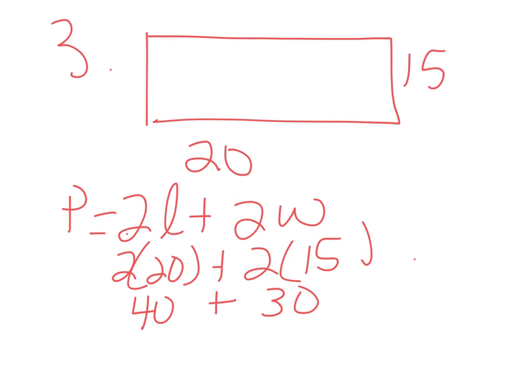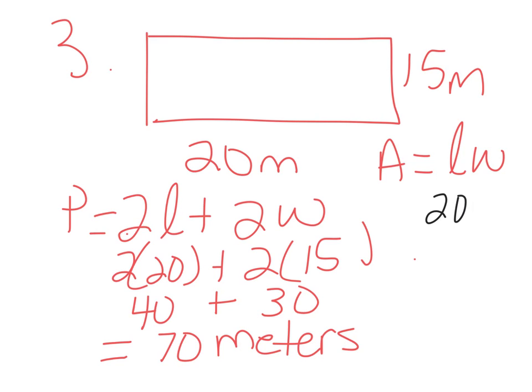On example number 3, it says we have a garden that is a length of 20 meters and a width of 15 meters. It wants you to find the perimeter and the area. The solution for P is we write down the formula in the first box, 2L plus 2W. Next box we work it out, 2 times 20 plus 2 times 15. We solve that down. That's 40 plus 30, and then the last one is 70, so it's 70 meters. The area formula is LW. That's going to be 20 times 15, which equals 300. The answer there is 300 square meters.